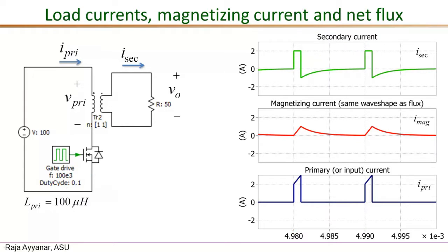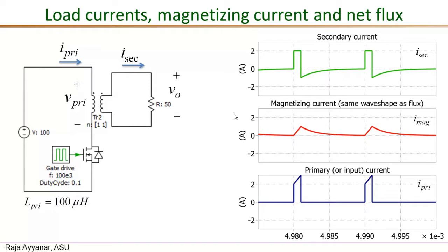During the on interval, the switch is on so the primary voltage V_primary equals the input of 100 V. Because the turns ratio is 1:1, the secondary voltage is also 100 V. The secondary load current I_secondary = 100 V / 50 Ω = 2 amperes. Looking at the simulation waveform — the top trace, I_secondary — the magnitude during the on interval is exactly 2 amperes, confirming our analysis.